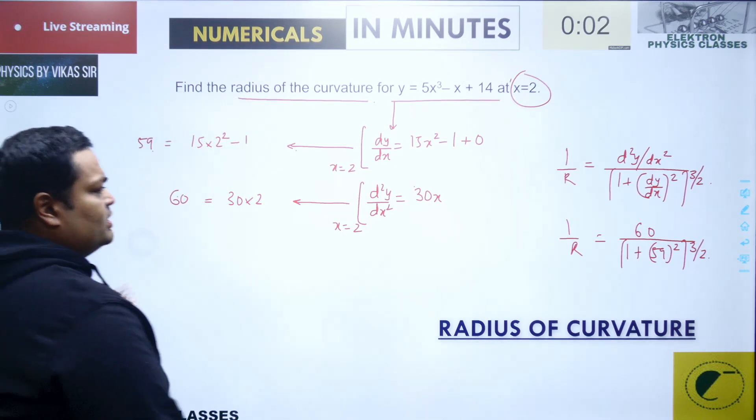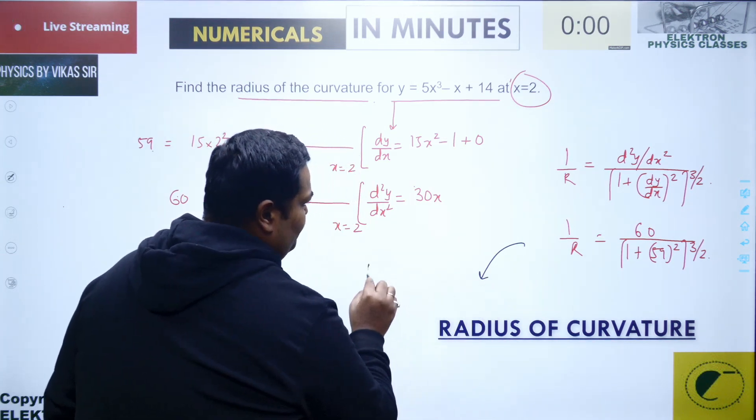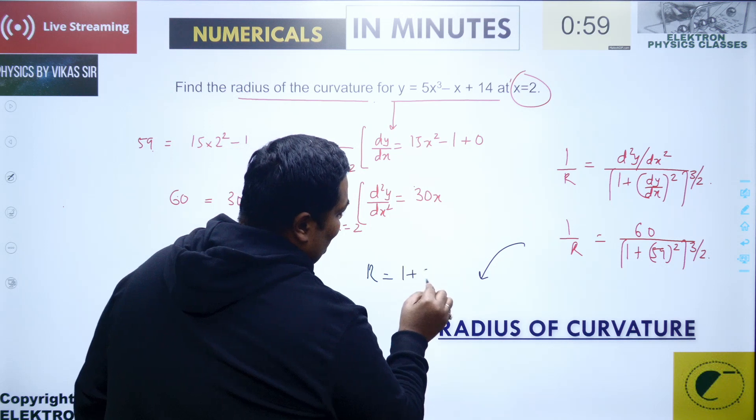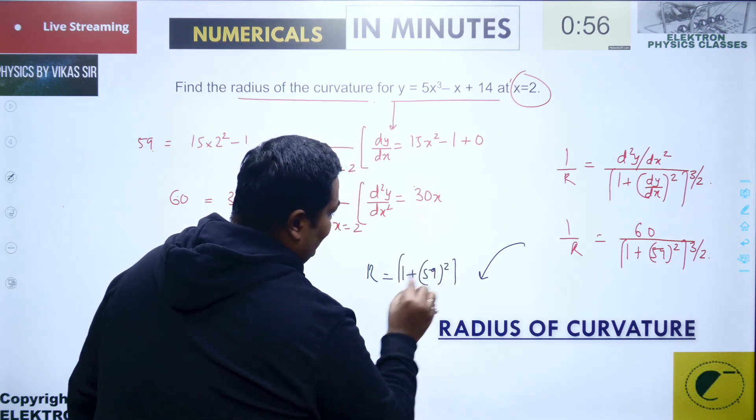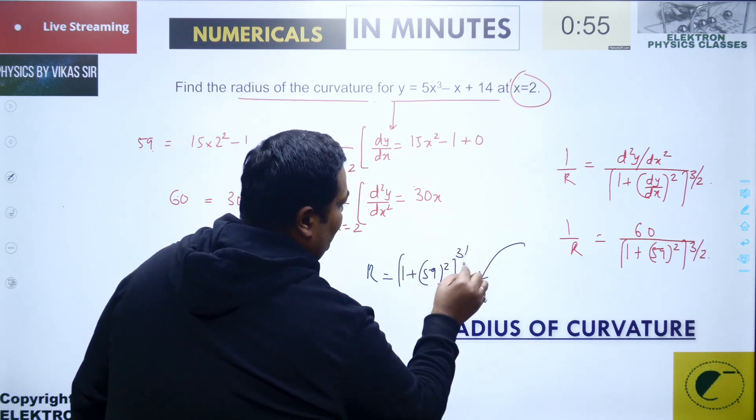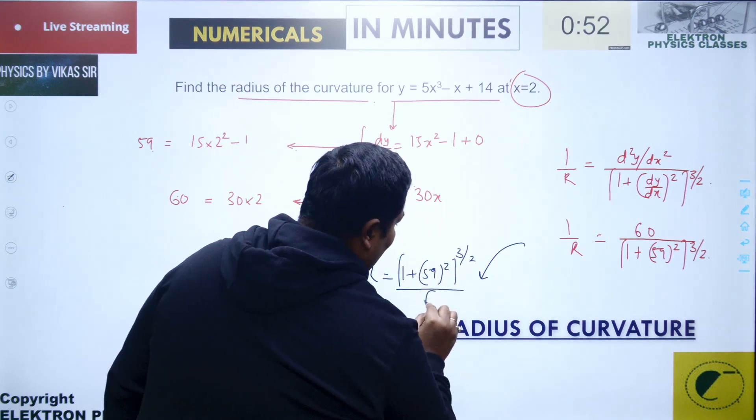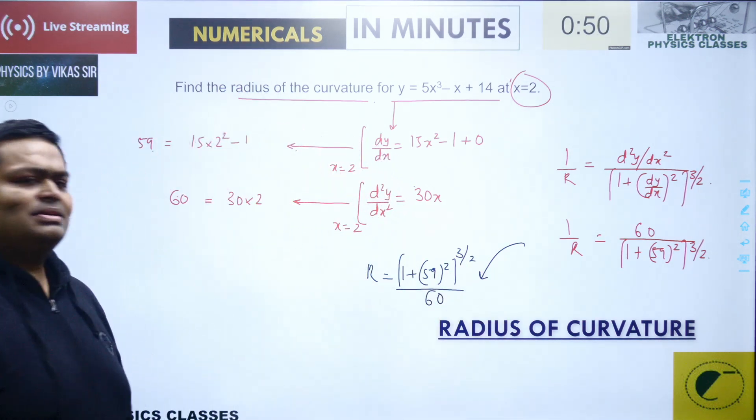I need to just calculate the value for the radius of curvature from here, so it will be r equals 1 plus 59 square whole raised to the power 3 by 2 divided by 60.